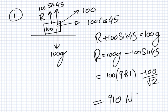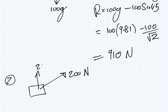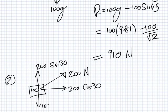Number 2. A woman pulled a 100 kilogram block over a rough surface at a constant speed. The rope she is using makes an angle of 30 degrees with the ground, and the tension in the rope is 200 Newton. What is the value of the friction force?